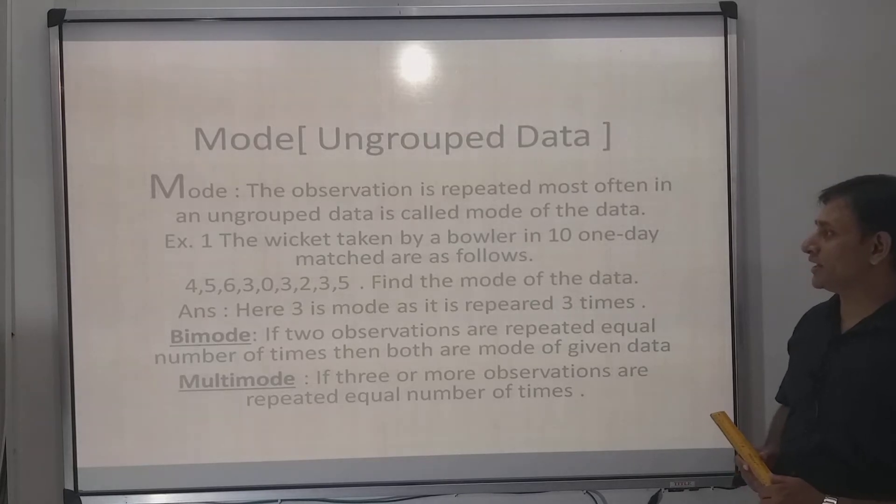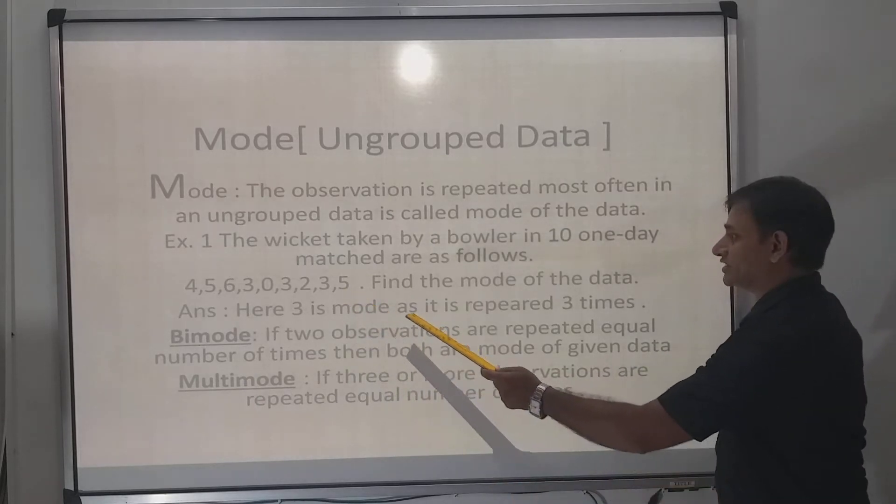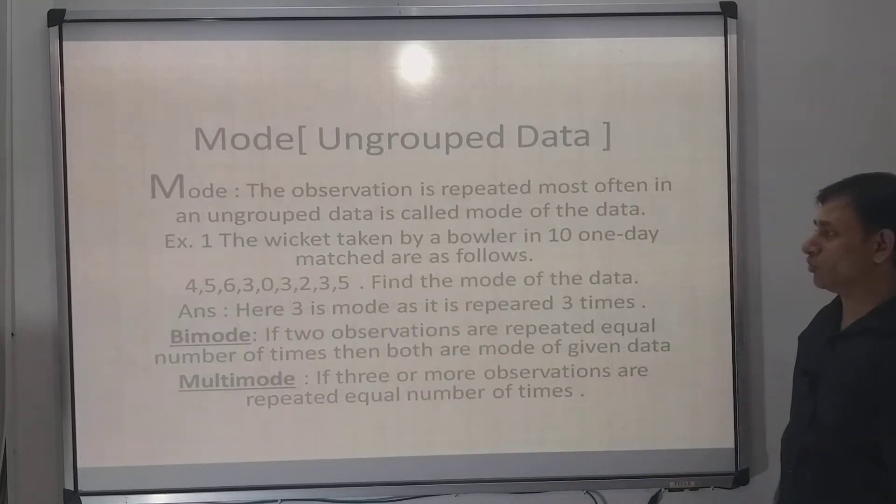So simple, mode is the observation which is repeated most times. Here 3 is repeated most times, that is 3 times. So 3 is the mode of the given data.